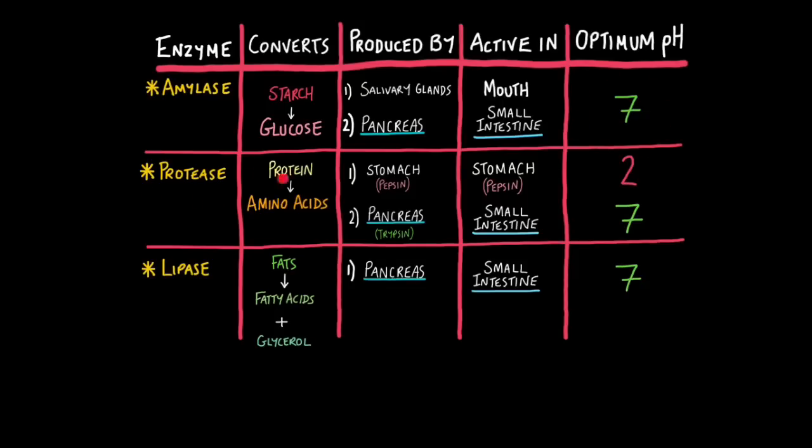Protease converts proteins to amino acids. One form of protease, pepsin, is produced in the stomach, whereas another, called trypsin, is produced in the pancreas. Pepsin is active in the stomach, whereas other proteases are active in the small intestine. Pepsin has an optimum pH of 2. That's why it can exist in the stomach, whereas other proteases have an optimum pH of 7. That's why they're best suited to the small intestine, which has neutral conditions.